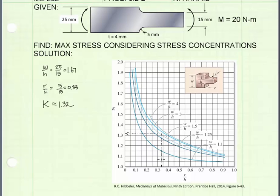Using the chart I was able to approximate a location where our ratio of R over H 0.33 would intersect a line that represents the W over H ratio of 1.67. Then I draw a horizontal line over to the K scale on the left, and I interpolate a value for K and I get a K value of approximately 1.32.